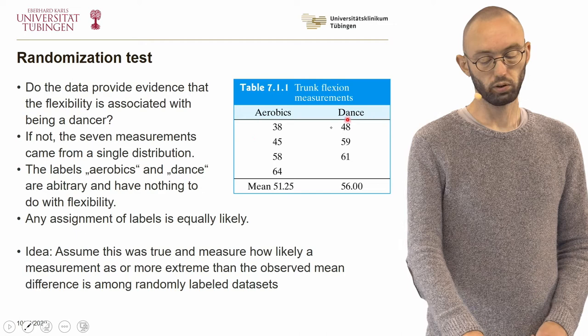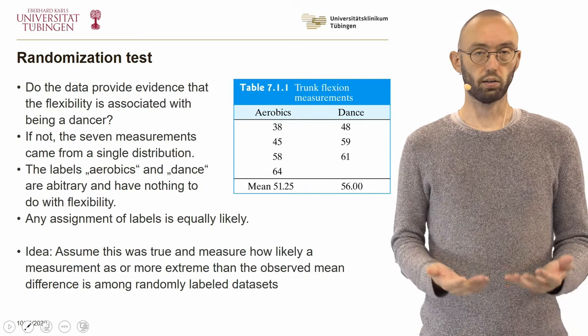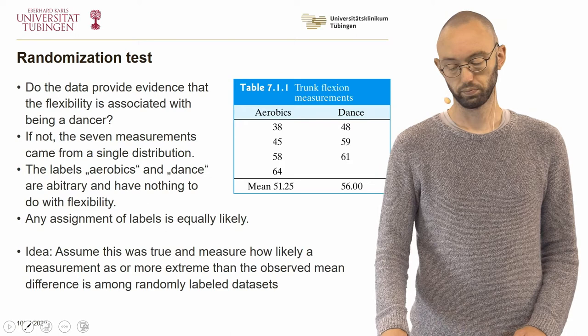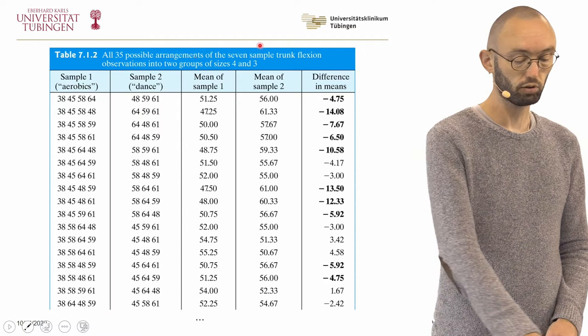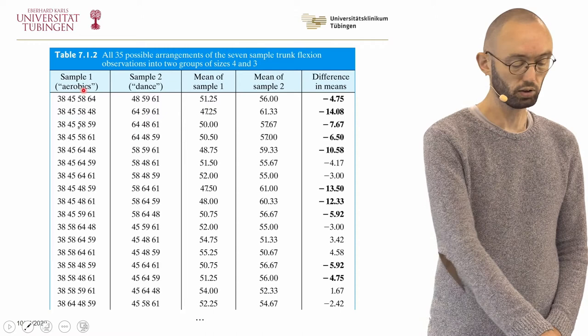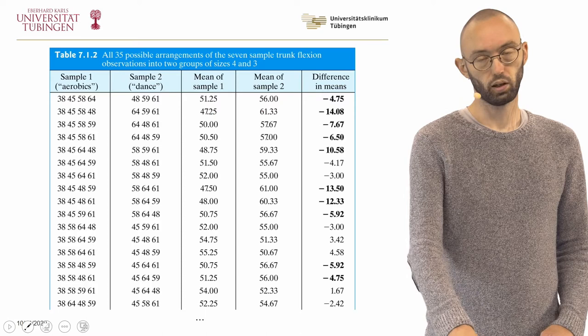So, we take these seven measurements and simply randomly assign the labels to each measurement, or assign the measurements randomly to the two groups. We do this many times and measure how likely it is to observe a mean difference as large as in our particular samples. Because the sample size is so small, we can exhaustively list all different assignments. Here you can see an exhaustive list of all possible assignments of the seven measurements to the two groups, along with the associated sample means and the difference in the means.